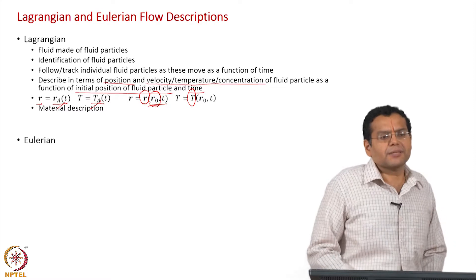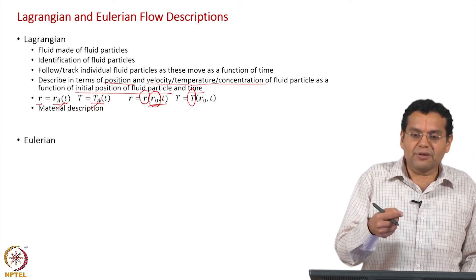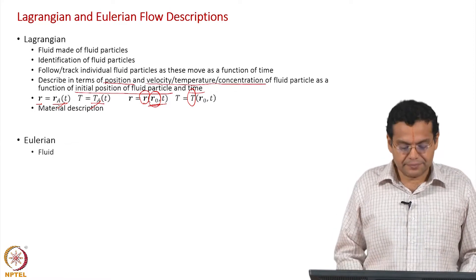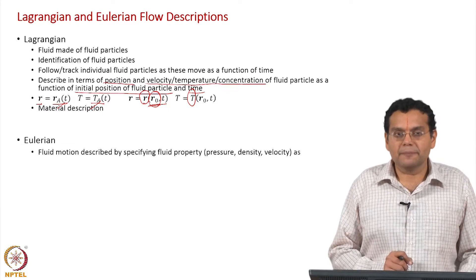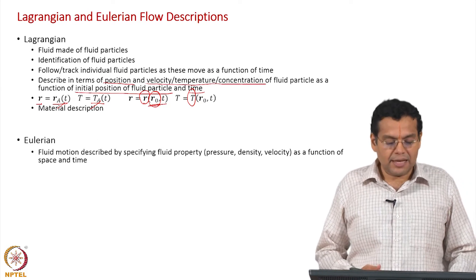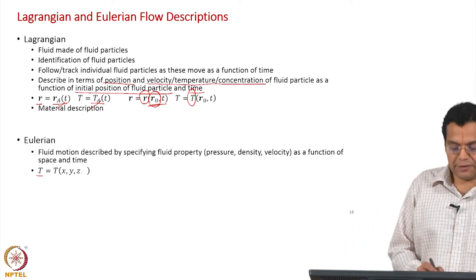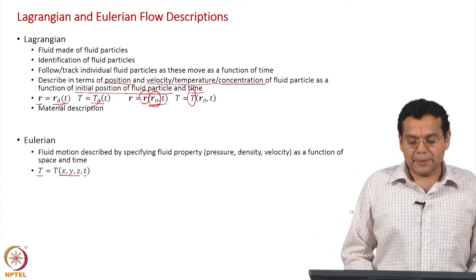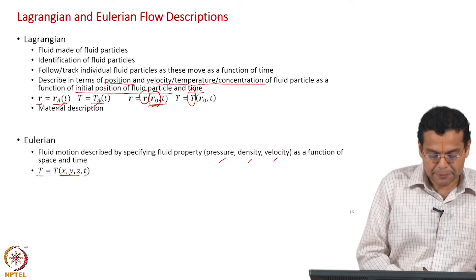What is the Eulerian description? For Eulerian description, we need not necessarily talk about fluid particles, though it is equivalent to sensing different fluid particles passing through a point. How do you describe fluid motion here? By specifying the fluid properties — pressure, density, velocity, temperature, etc. — as a function of space and time. For example, temperature is a function of space and time. The dependent variable could be temperature, pressure, density, velocity, or concentration, and the independent variables are spatial location and time.